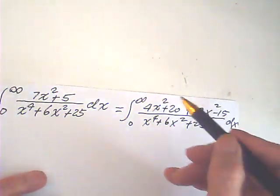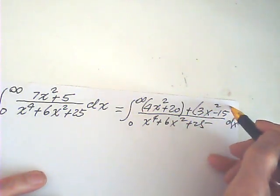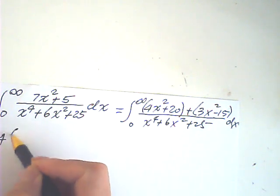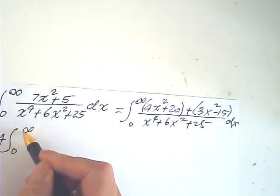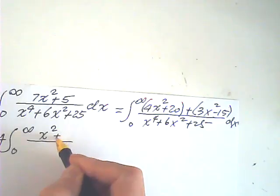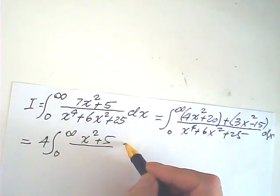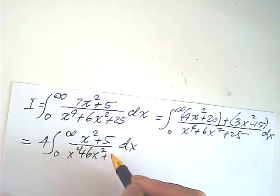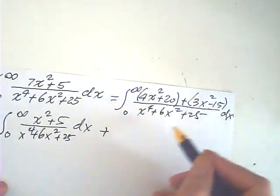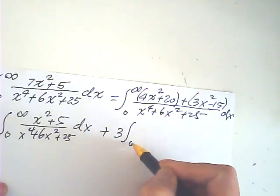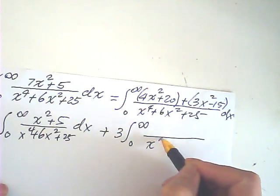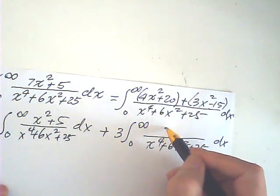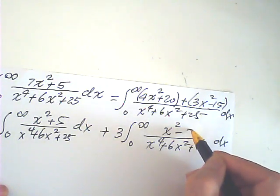Now, of course, I want to change this integral into 2. And the first one is 4, 4 is a common factor. This will be x squared plus 5, dx, this is x to the 4th plus 6x squared plus 25. Plus, this one has a common factor 3, and the denominator is this, x to the 4th plus 6x squared plus 25. And the numerator will be x squared minus 5.